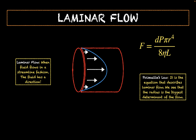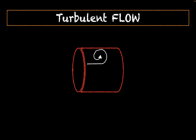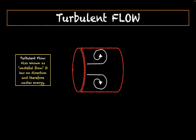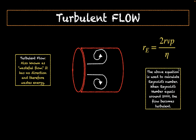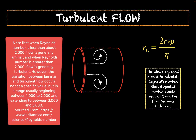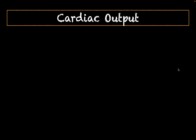The second type of flow is turbulent flow, which has no particular direction and is called wasteful flow because it wastes energy. To determine when flow becomes turbulent, we calculate Reynolds number (Re): Re equals 2 times the radius times the velocity of the fluid times the density of the fluid, divided by the viscosity. When this number reaches around 2000 and above, the flow is said to become turbulent.